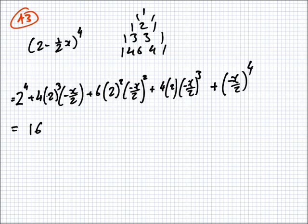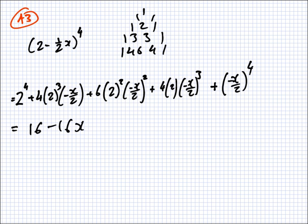2 to the 4 is 16. Next term: 4 times 8 gives minus 16x. Then: 2 squared is 4, 4 over 2 squared cancel, leaving 6x squared. Then: 4 times 2 is 8, and 2 cubed is also 8, they cancel leaving minus x cubed. And lastly plus x to the 4 over 16. So that's the answer.